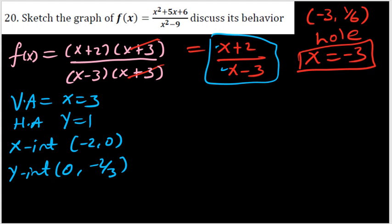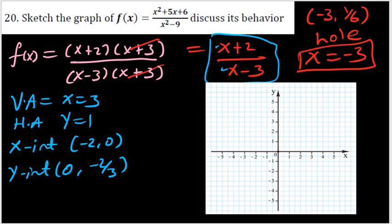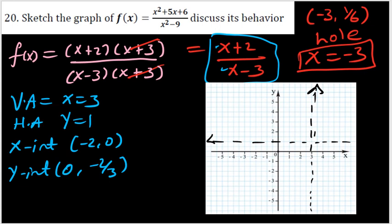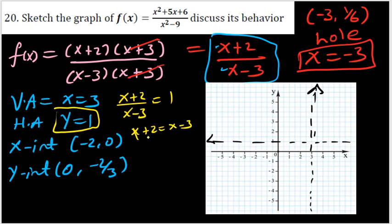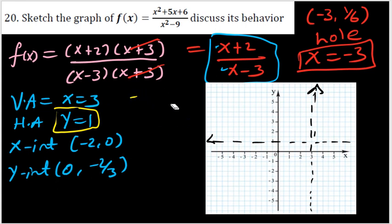Now let's roughly plot the graph. We draw a vertical asymptote as a broken line at x = 3, and a horizontal asymptote at y = 1. The graph may cross the horizontal asymptote — to check, set (x+2)/(x-3) = 1, which gives x+2 = x-3. The x terms cancel with no solution, meaning the graph does not cross the horizontal asymptote in this case.